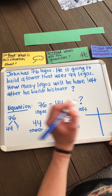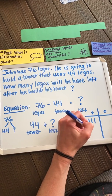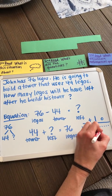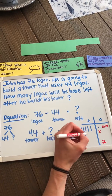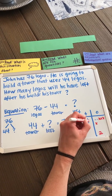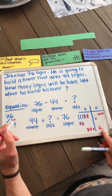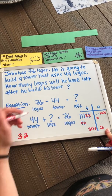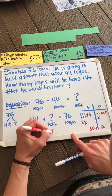I know I have 76 total Legos and I'm going to use 44 for the tower, so let's use the ones and tens strategy to represent 76. Now I'm going to take away 44. I'll take away four ones first — that leaves me with two ones. Then I take away 40: 10, 20, 30, 40. I am left with three tens, which is 30. 30 plus 2 is 32. So how many Legos will he have left after he builds his tower? He will have 32 Legos left.